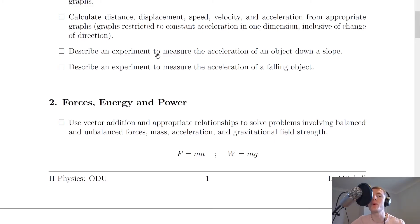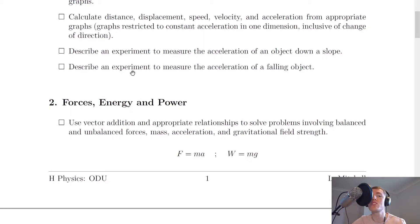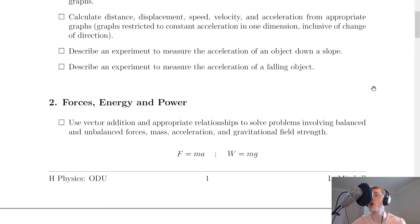Lastly, there are two experiments you need to be able to describe. The first is an experiment to measure the acceleration of an object down a slope — a trolley accelerating down a slope, which you would have done at National 5. The second is to measure the acceleration of a falling object, which is new for Higher. This involves an electromagnet attached to a ball bearing: when you switch the electromagnet off, the ball bearing falls, you measure the time and distance, and use an equation of motion to calculate the acceleration due to gravity.